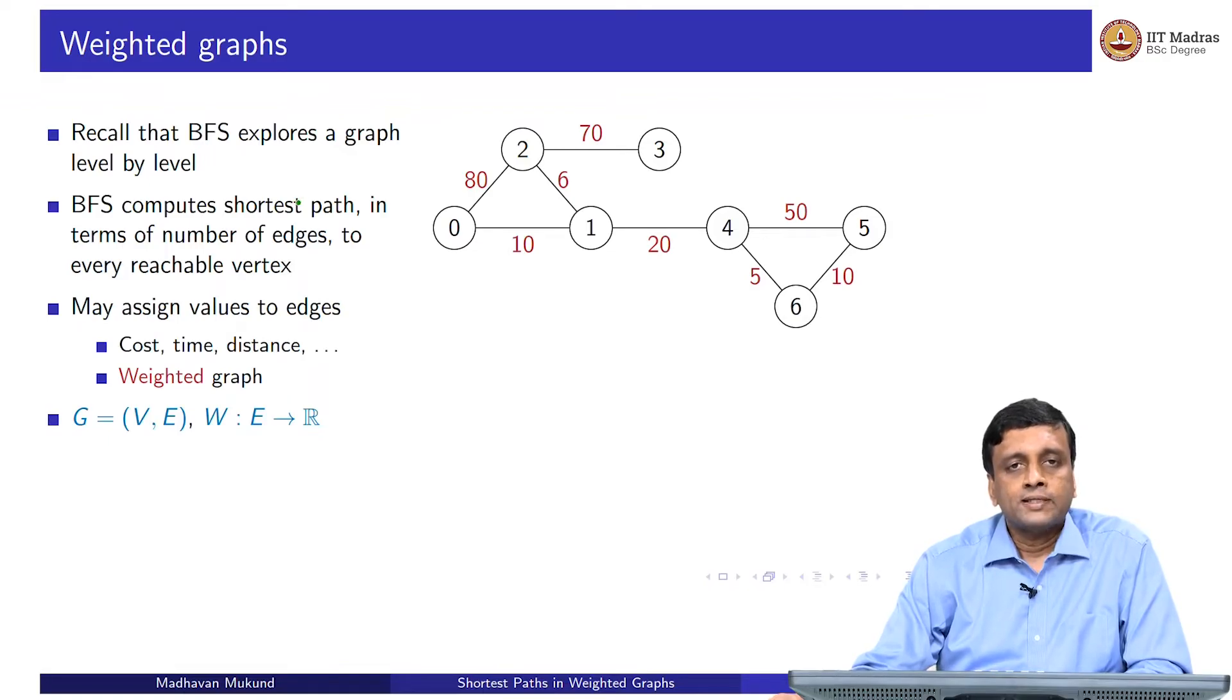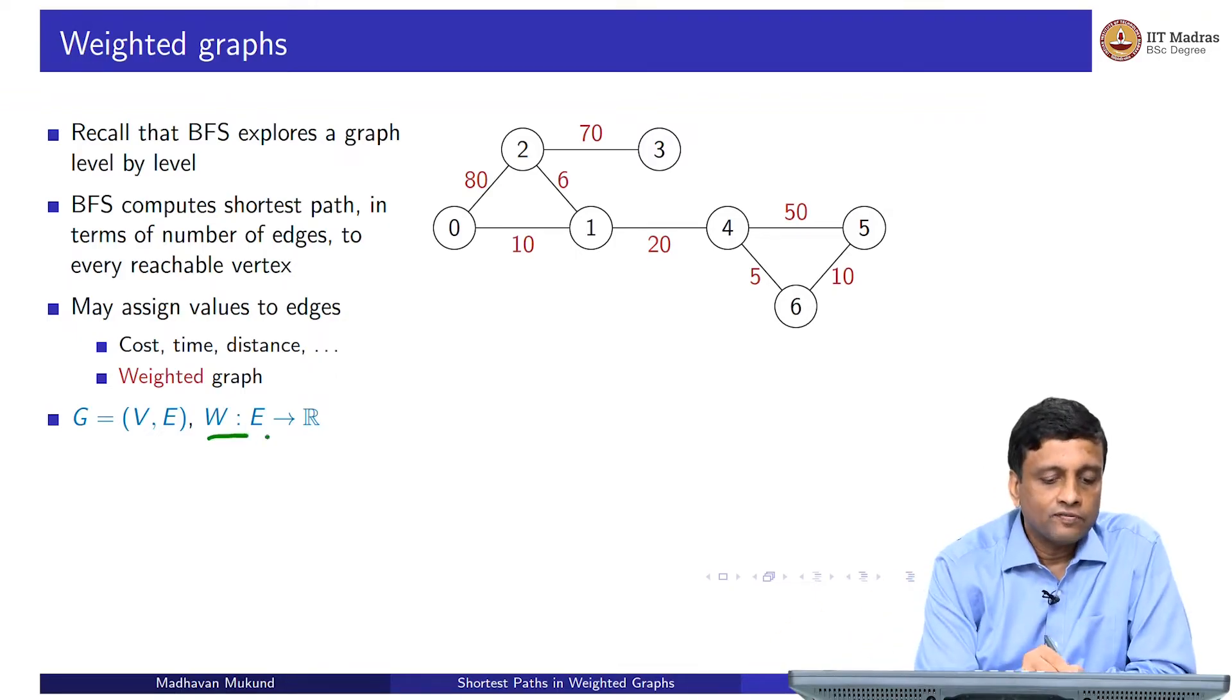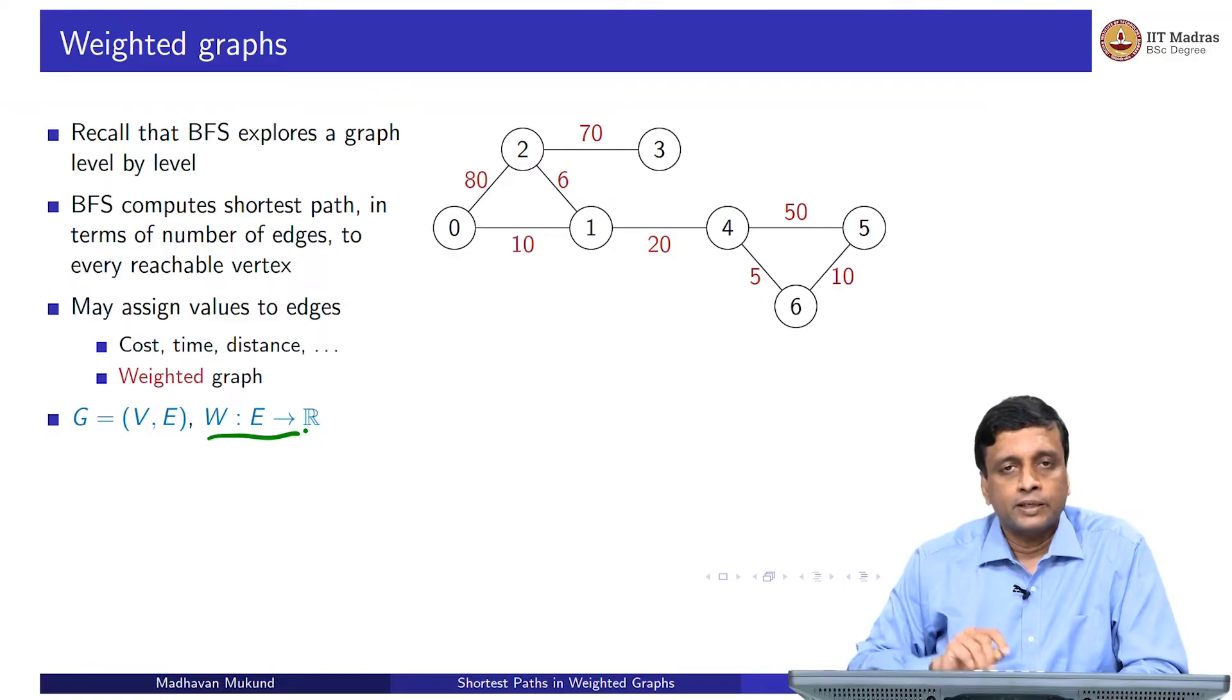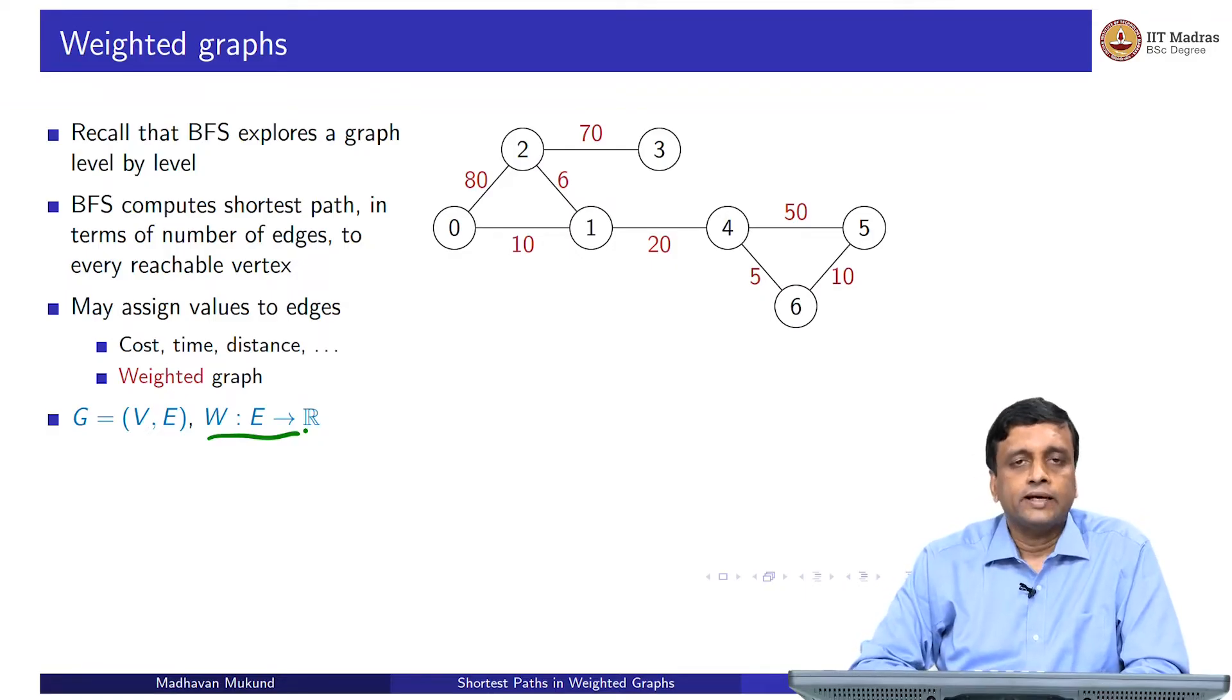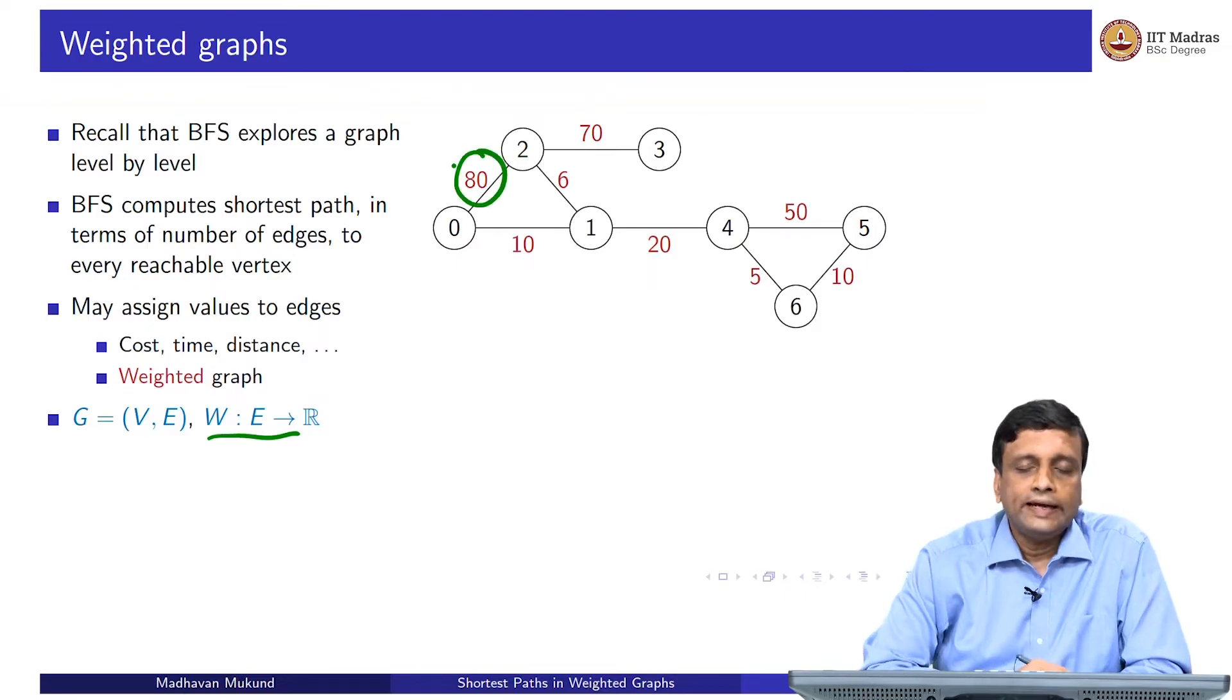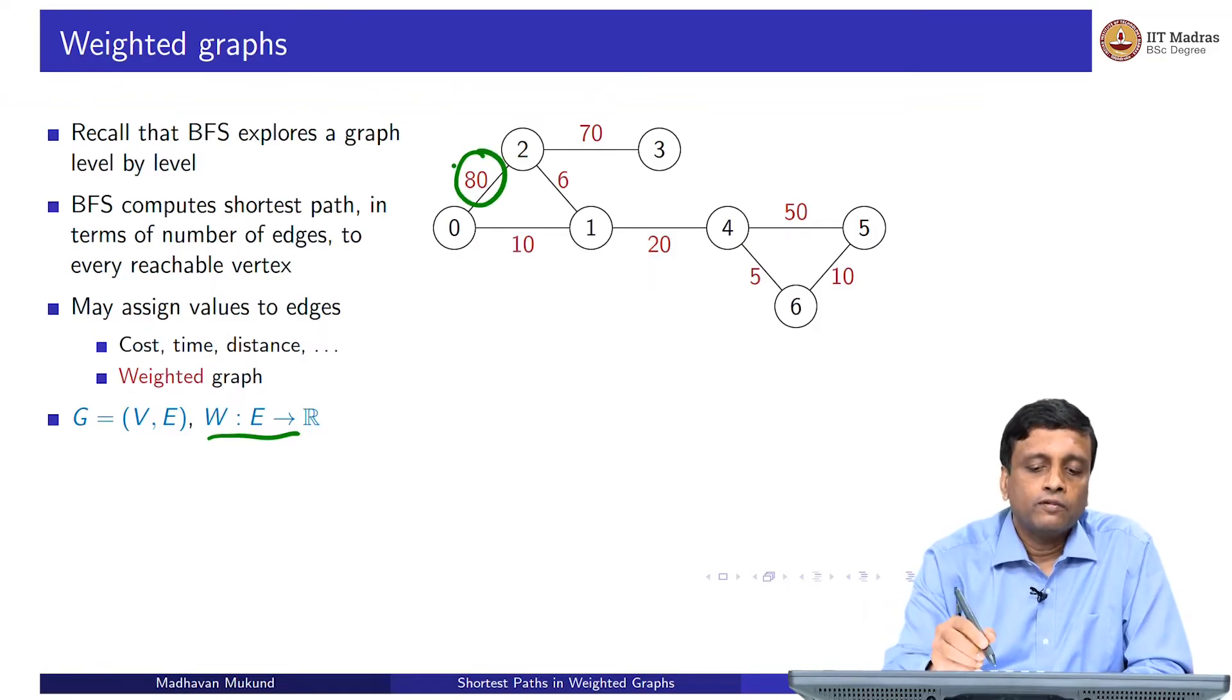In a weighted graph, we assign costs or weights to each of the edges. This is expressed as a function which we can sometimes write as W, which takes every edge and assigns a real number to it. This could be any number, it could even be negative. We will see what it means to have a negative cost in the graph. But here is an example of a graph on the top right, which has some numbers. We have a cost of 80 for going from 0 to 2, we have a cost of 10 for going from 0 to 1 and so on.